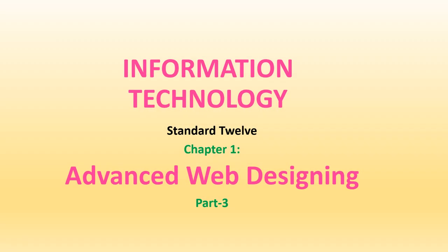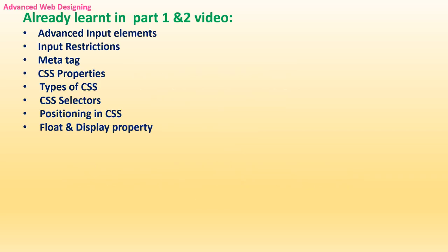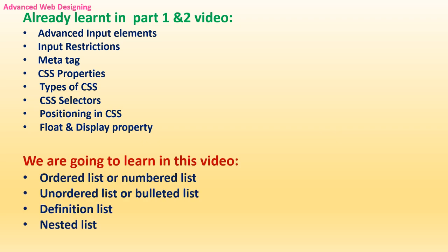Welcome back students. This is part 3 of Advanced Web Designing. We have already learned in part 1 and 2: advanced input elements, input restrictions, data tag, CSS properties, types of CSS, CSS selectors, positioning, and CSS float and display property. In this video, we are going to learn ordered list or numbered list, unordered list or bulleted list, definition list, and nested list.